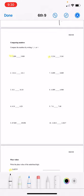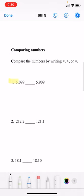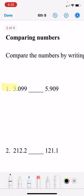So we're going to compare the numbers by writing less than, greater than, or equal to. So number one. So here, you guys got to look at the place values carefully.